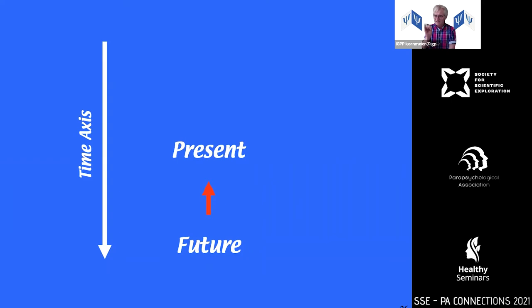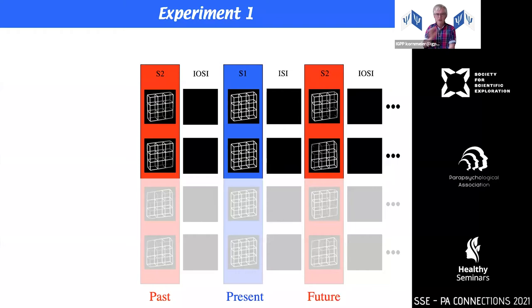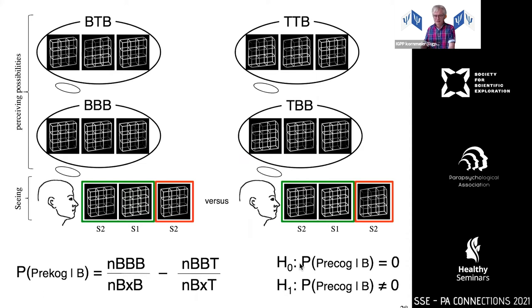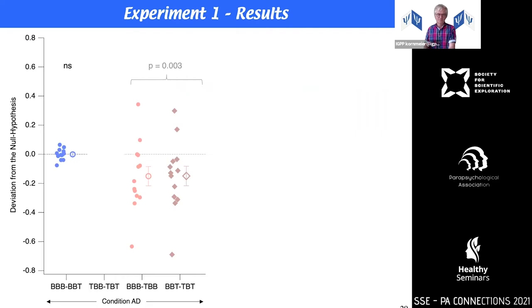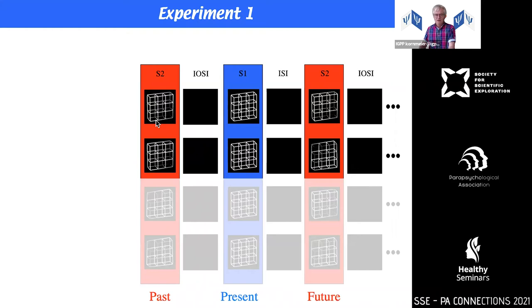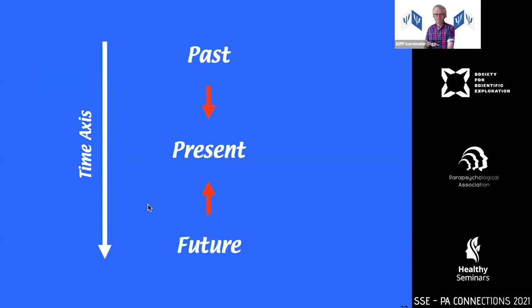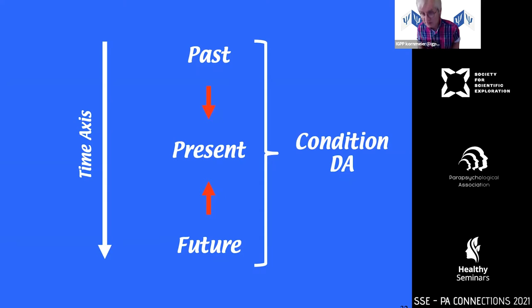Now we can apply the same logic to analyze influence from the future — namely precognition effects. To do so, we kept the past stimuli identical but looked only at scenarios where the future is different, asking whether a different future has an influence on how we see the present. Applying the same calculation logic with the same H0 and H1, the result was no significant effect — neither with the front side looking to the bottom right, nor to the top left.